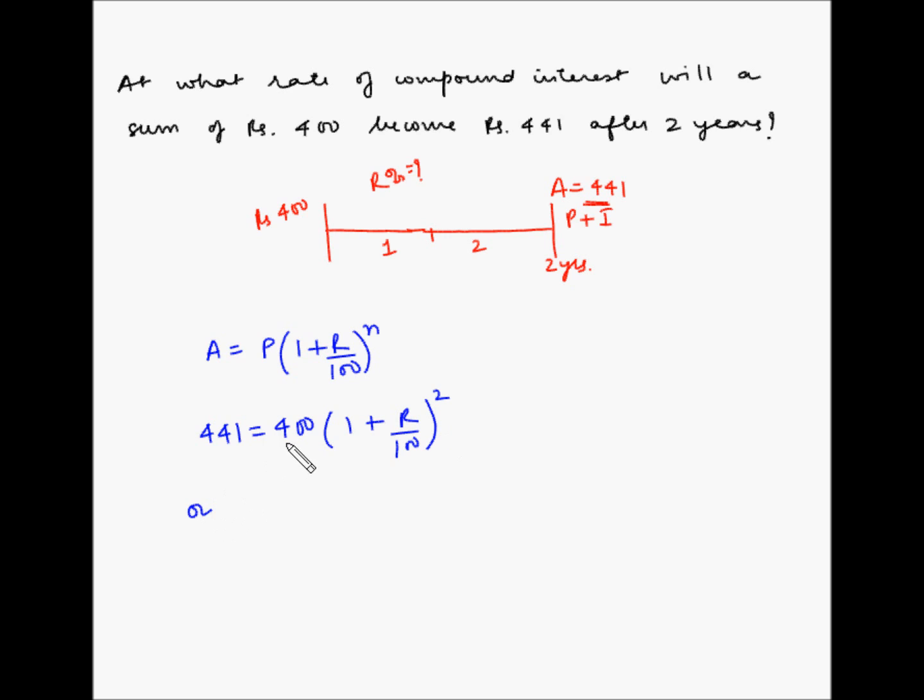Let's take this 400 on the other side. So it becomes 441 divided by 400 is equal to 1 plus R by 100 square.